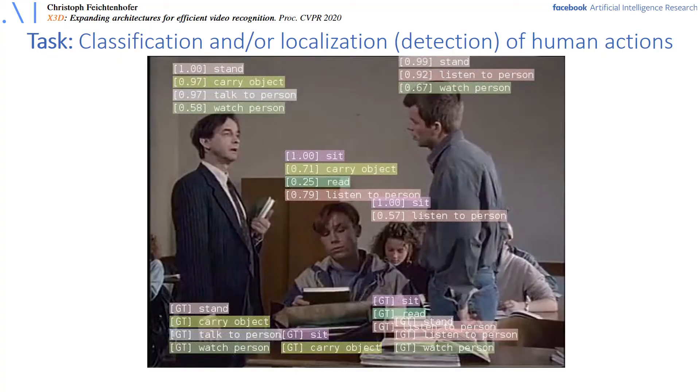This work is focusing on human action classification and detection in video. The goal is to detect all actions that people are performing in the scene. This image is a sample from the AVA dataset with the ground truth actions shown at the bottom.